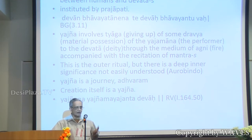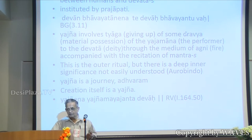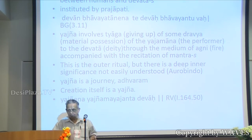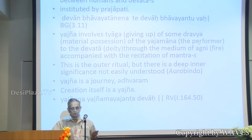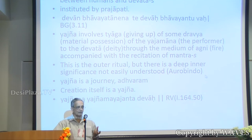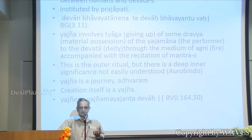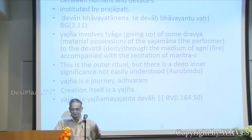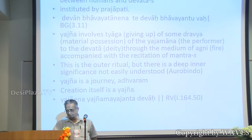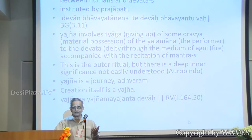Yajna is a very ancient institution. In Bhagavad Gita it says it was done by Prajapati — Prajapati Puro Srishtva. This Yajna is a collaborative activity between humans and the devatas. In simple terms, Yajna involves Tyaga — giving up of some dravia, material possession belonging to the ajamana who performs it — to a devata, through the medium of agni, and it is done to the accompaniment of recitation of mantras. But this is the outer ritual. Creation itself is a Yajna. Everything came from that Yajna.